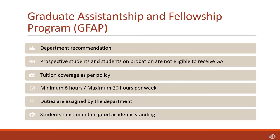For the graduate assistantship and fellowship program, graduate assistantships are awarded for two years based on the department's recommendation. Prospective students are not eligible for a GA until they become regular graduate students, and students on probation are not allowed to receive a GA until they are in good academic standing. The GA typically covers 100% of your tuition for a total of two to three courses per semester as per program requirements, unless your admission letter states otherwise. Everyone who receives a GA must work a minimum of eight hours of GA duties in exchange for tuition coverage. If asked to work beyond eight hours, you will be paid for the additional hours.